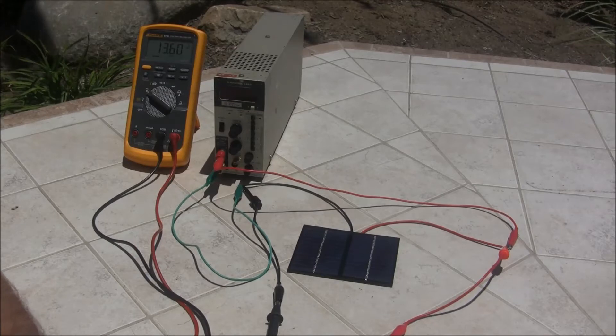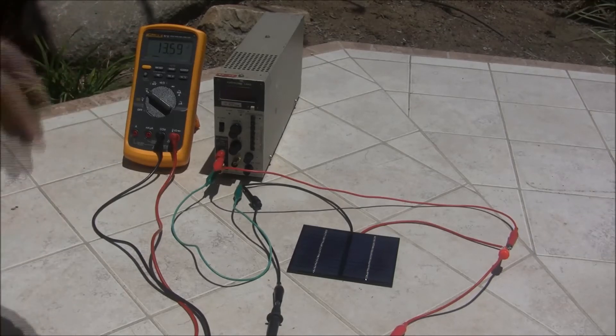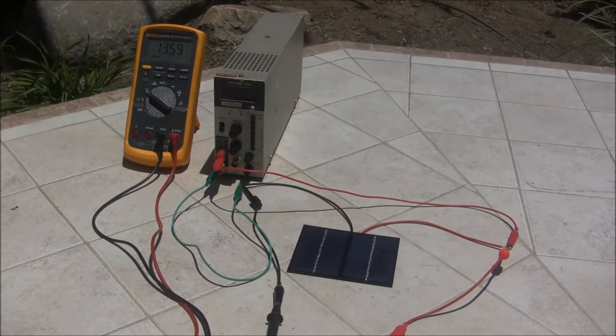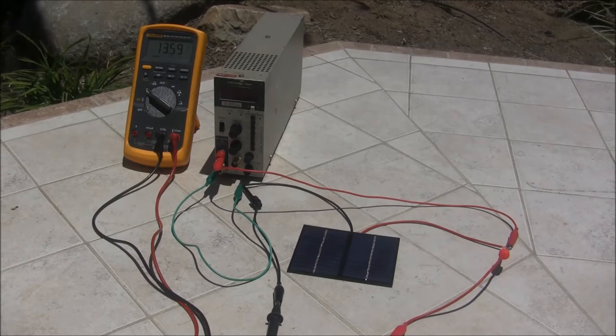With no load attached to the solar panel, we're getting 13.61 volts. Someone who picked this up off eBay and tests it with their multimeter, although the voltage fluctuates a little as the intensity of the sun changes, on the surface this looks pretty good.